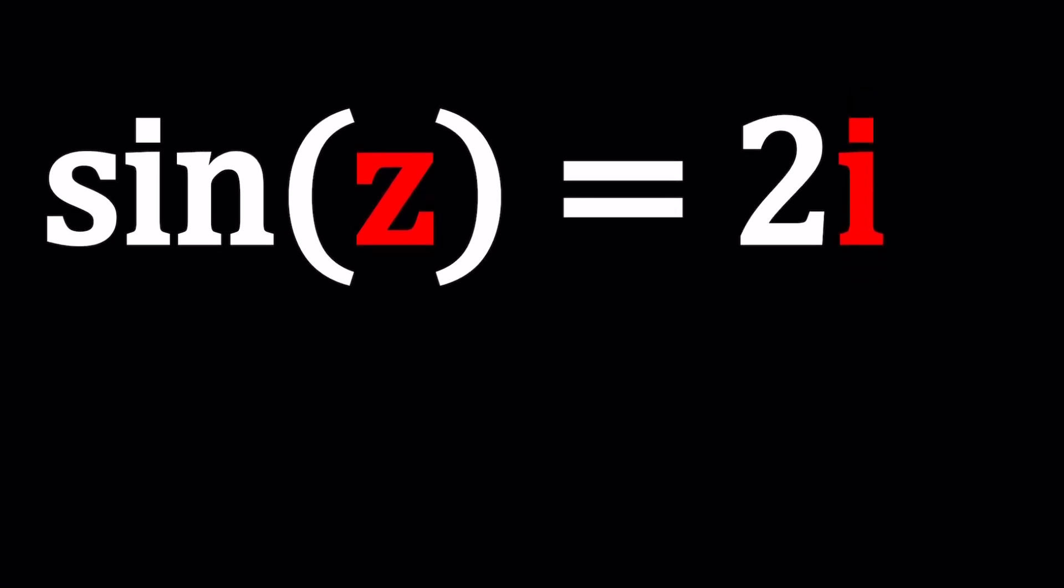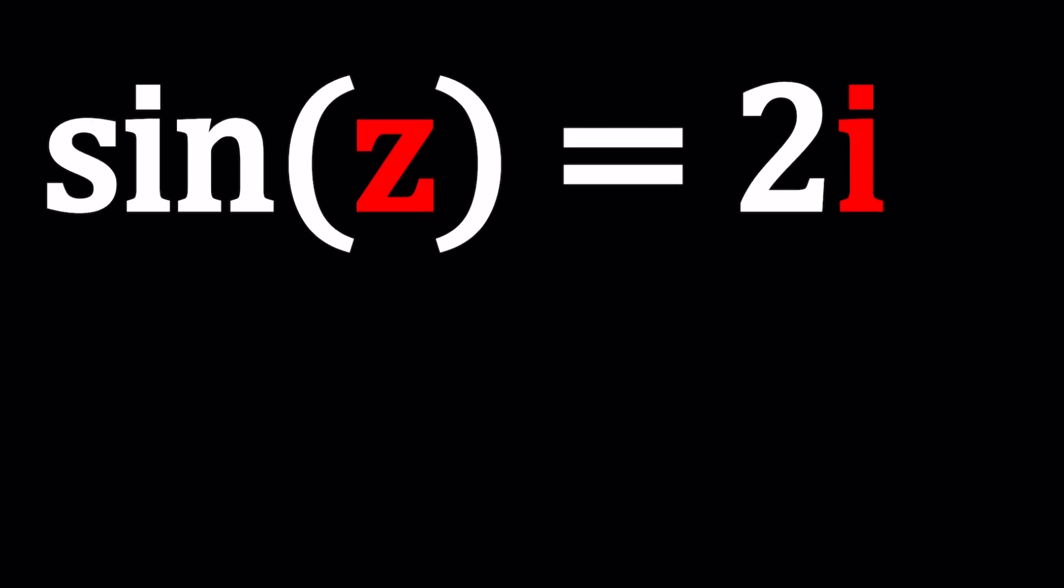So we have sine of z equals 2i and we could probably say something like z is equal to the arc sine of 2i. That would be a cheap solution but sometimes it would work. Can you use a calculator to find arc sine of 2i? How would you enter 2i? Would you write 2 times the square root of negative 1? Would the calculator accept that? Let's see how we can handle this problem and these kinds of problems.